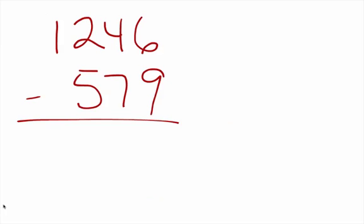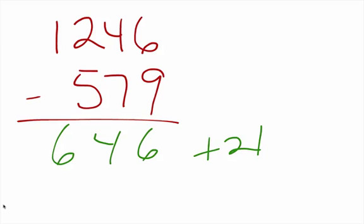Let's do a couple more. This one looks a little more difficult, but it really isn't. 1,246 minus 579 — 579 is how far from 600? That's 21. So we say plus 21. 1,246 minus 600 gives us 646, and 646 plus 21 is going to give us 667.